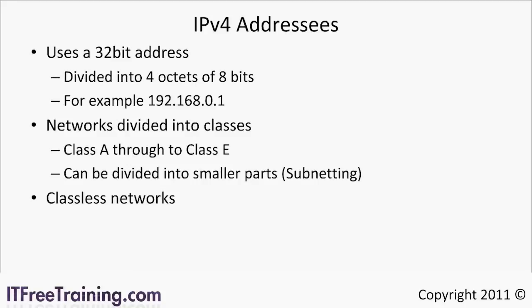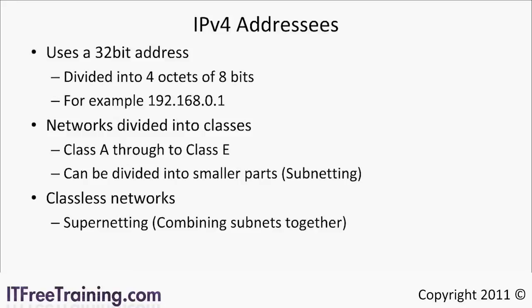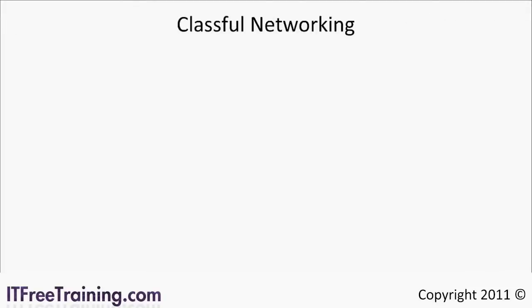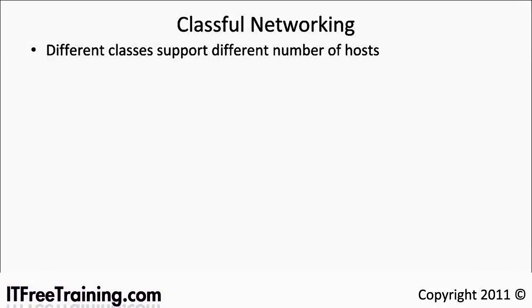Classless networks introduce a system called supernetting which allows you to combine multiple networks together. I will go through all these features individually, but first let's start with classful networking. Originally all IP addresses were allocated based on a class. The class used determines the number of hosts that can be deployed on that network. Today classless networks have become more common, and the remnants of classful networking still exist and are often referenced, so it is an important topic to know.